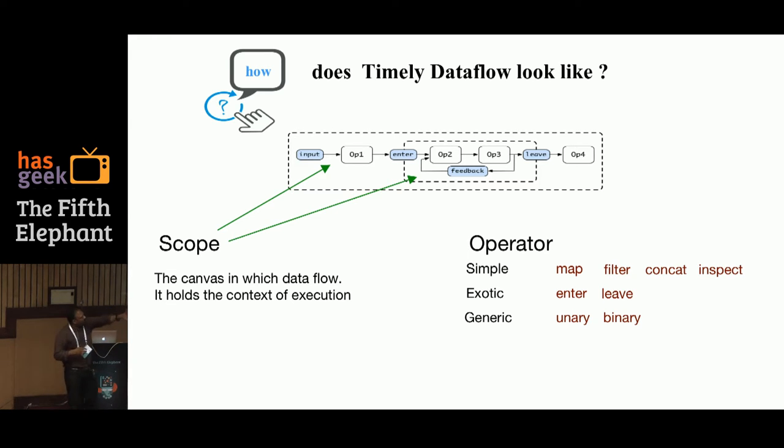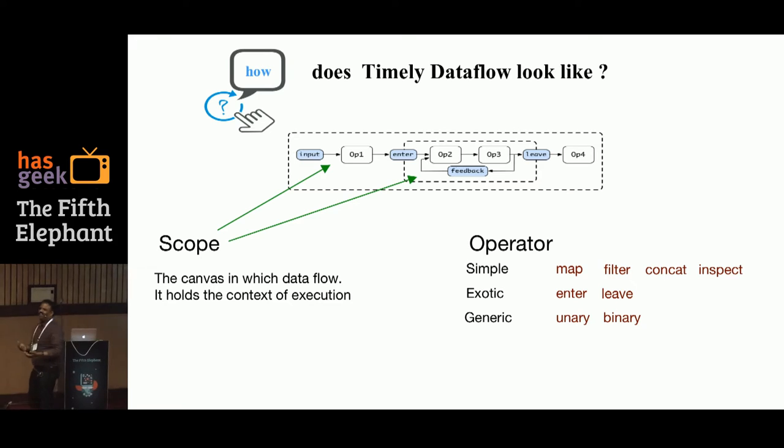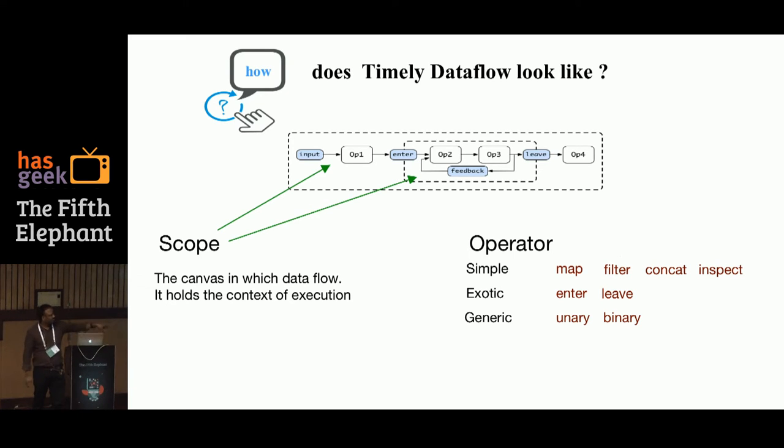So if you actually see there is an outer scope and there are a bunch of operators. There is also an inner scope because that's where the loop happens. And you have this concept of an operator. So everything happens in an operator. There are a bunch of predefined operators. What you can expect: map, filter, concat, inspect. But there are a few exotic operators. And I mean exotic. These are the operators that makes the loop possible. But if you think these operators are not enough, I want to write something specific because what I have is unique. You can implement your own operator. And those are the unary and binary of the generic operators. You can write your own logic inside an operator and express that in the graph.